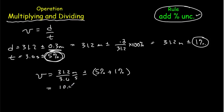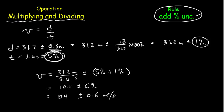Working that out gives 10.4 meters per second plus or minus 6%. We usually convert back to absolute uncertainties: 6% of 10.4 is about 0.6. So our final answer is 10.4 plus or minus 0.6 meters per second. Double-check: there's one significant digit on the uncertainty, and it's in the tenths decimal place, which matches the final digit of the value.